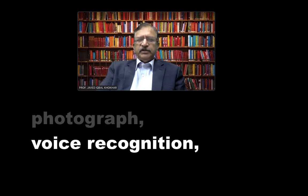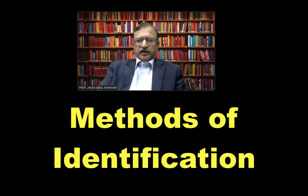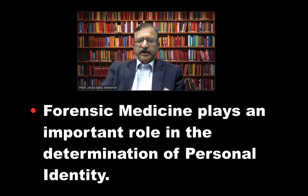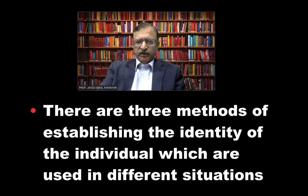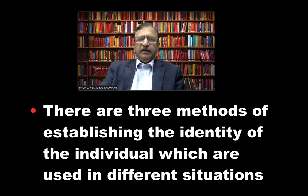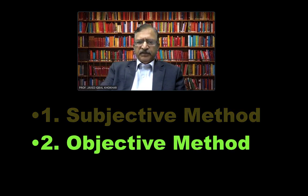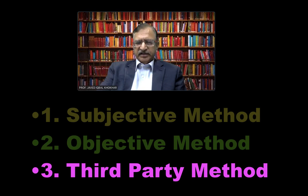The photographs of the individual, the voice recognition, the handwriting, and the habits are also important tools of recognition. Now about the methods of identification — forensic medicine plays an important role in the determination of personal identity. The three methods most commonly employed for the establishment of identity are the subjective method, the objective method, and the third party method. They can be applied in different situations — like whether the body is fresh or decomposed, or whether it is a living person or a dead person.